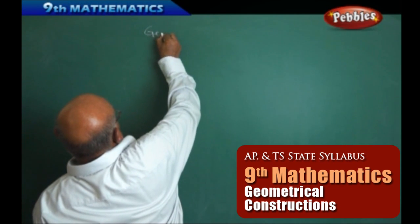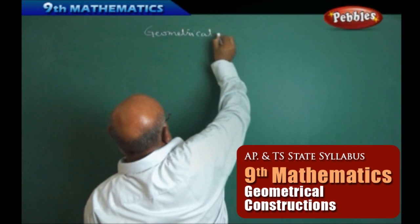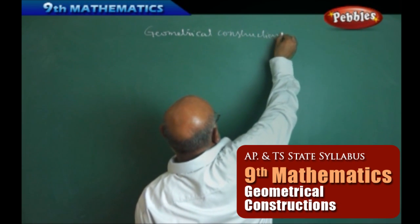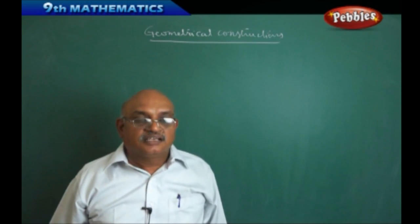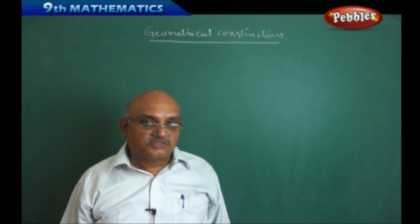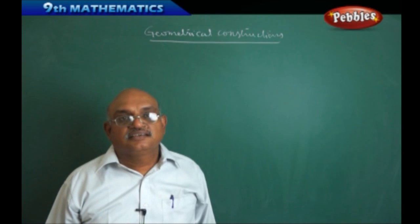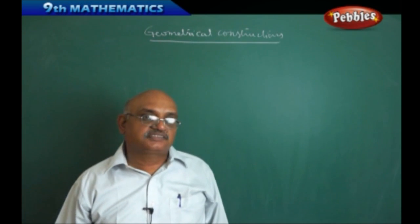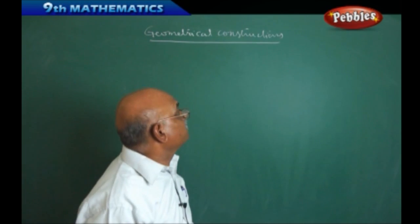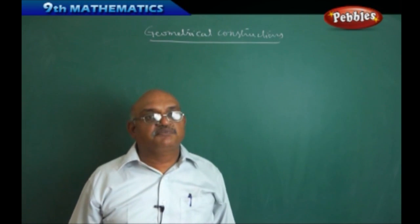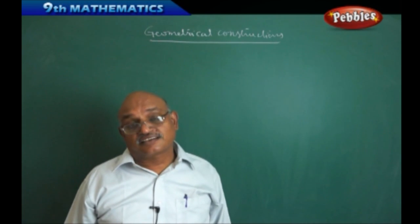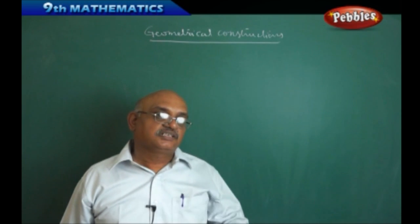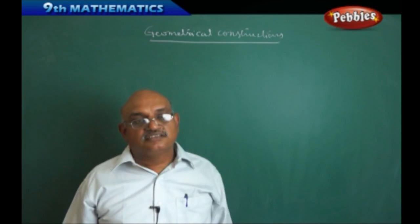Now we are going to see the geometrical constructions. The basic idea of this chapter is one should know how to construct triangles, how to construct angular bisectors, how to draw circles, and how a line segment can be divided into many parts. In future, if you want to become a mechanical engineer or civil engineer, we should know how to construct a triangle and various structures — this chapter is going to be very useful.